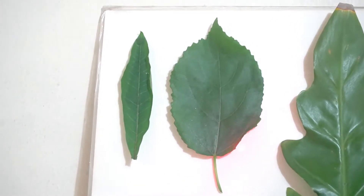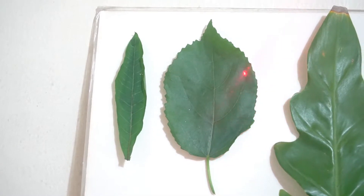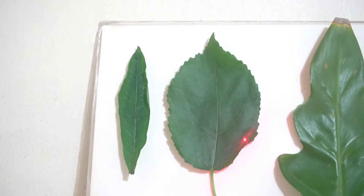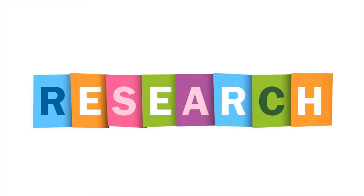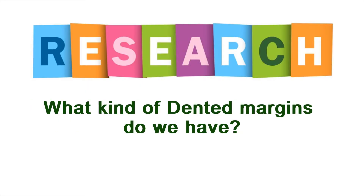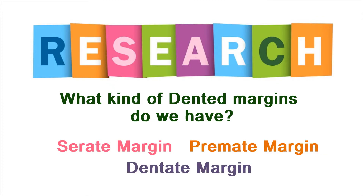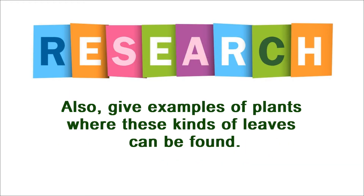In terms of dented margin, we have different types of dented margins. I want you to research on this — there are different types of dented or non-smooth margins. I can give you the names and you find out what kind of dented margins we have. We have serrate margin, crenate margin, and dentate margin. These are different types of dented margins. I want you to research on them and also give examples of plants where those kinds of leaves can be found.